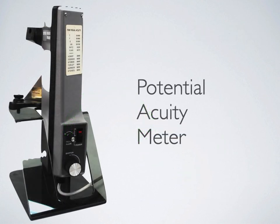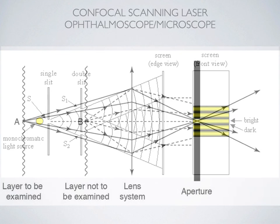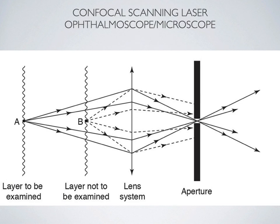Potential acuity meters (PAMs) project an image around more lucent areas in a cataract to assess what the patient is capable of seeing. Laser interferometers cast bands on the retina to indicate macular resolution. Confocal scanning laser ophthalmoscopes are not commonly tested on O-caps.